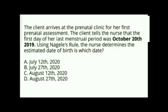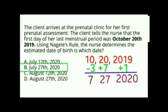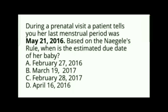Board exam example: A client at the prenatal clinic states the first day of her LMP was October 20, 2019. Using Nagel's Rule: October is month 10, so 10, 20, 2019. Applying minus 3, plus 7, plus 1: 10 minus 3 is 7 (July), 20 plus 7 is 27, 2019 plus 1 is 2020. The estimated date of birth is July 27, 2020. The correct answer is letter B.